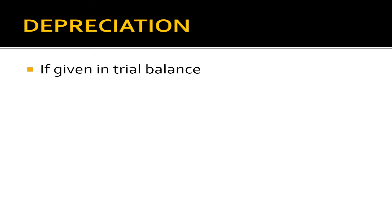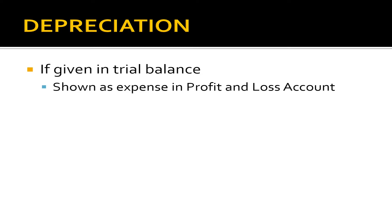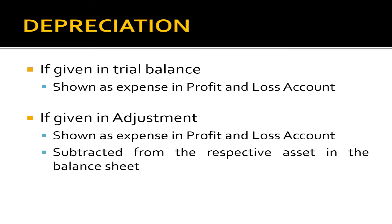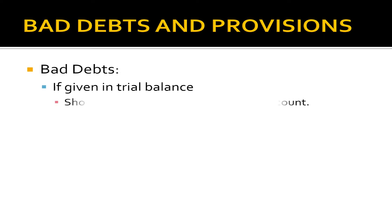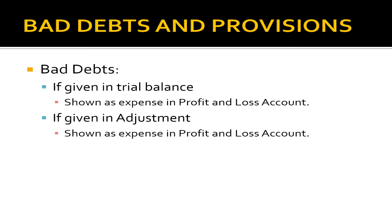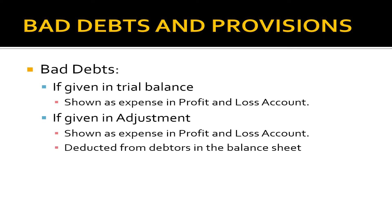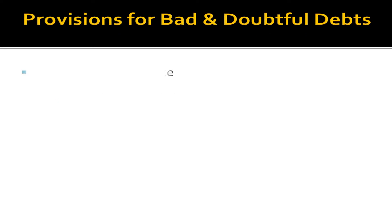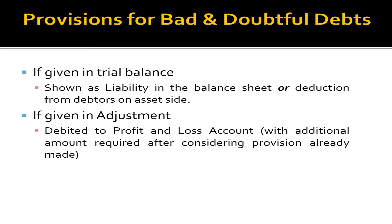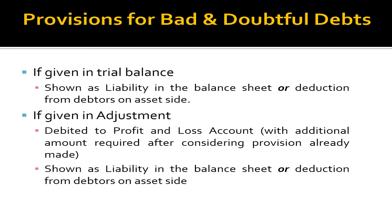Let's move to depreciation. If depreciation is given in the trial balance, it is shown as an expense in the P&L account. If given in adjustment, it is shown as an expense in the P&L account and subtracted from the respective asset in the balance sheet. For bad debts — if given in the trial balance, they are shown as expense in the profit and loss account. If given in adjustment, it is shown as expense in the P&L account and deducted from debtors in the balance sheet. For provisions for bad and doubtful debts: if given in the trial balance, it is shown as liability in the balance sheet or deducted from debtors on the asset side. If given in adjustment, it is debited to the P&L account with the additional amount required after considering the provision already made, and shown as liability in the balance sheet or as a deduction from debtors on the asset side.